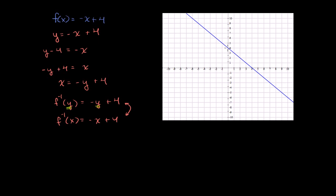The y-intercept is 4, so it's going to be the exact same thing. The function is its own inverse. So if we were to graph it, we would put it right on top of this. In the first inverse function video, I talked about how a function and its inverse are the reflection over the line y equals x. The line y equals x looks like this. And negative x plus 4 is actually perpendicular to y equals x, so when you reflect it, you're just flipping it over, but it's going to be the same line — it is its own reflection.